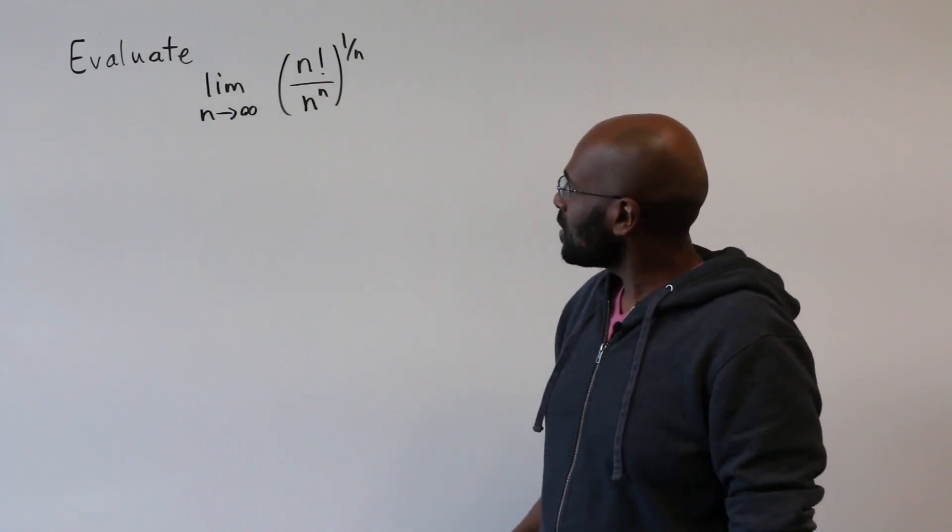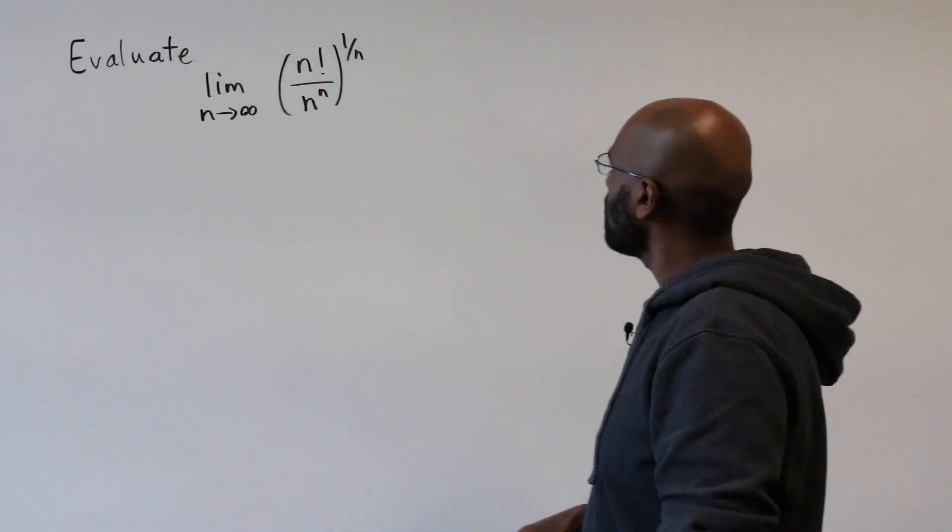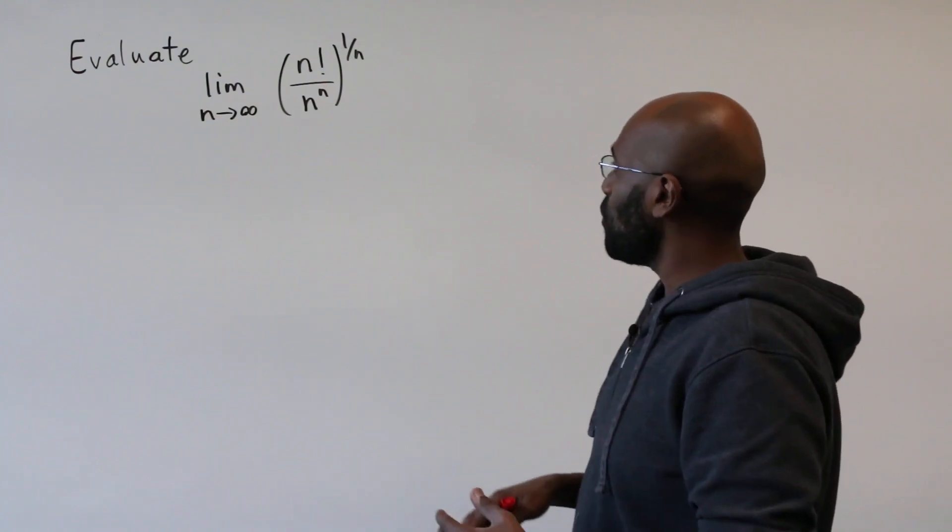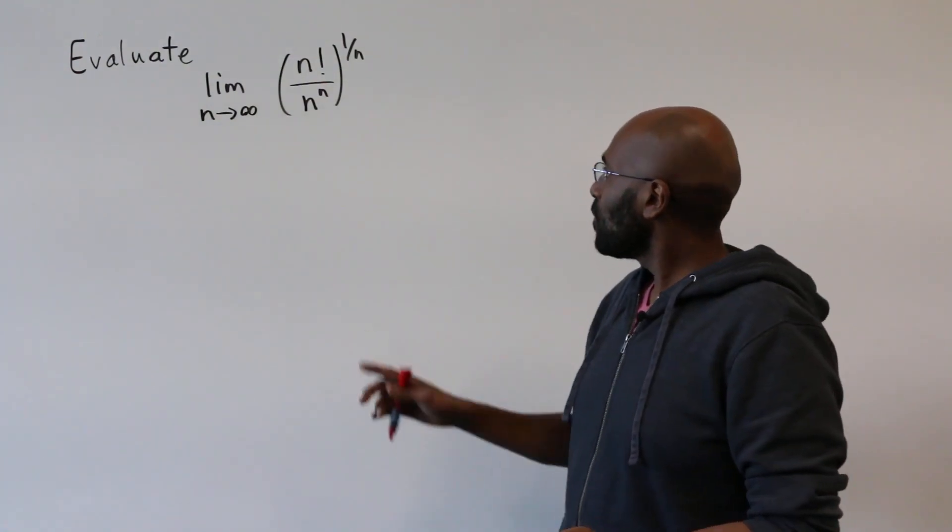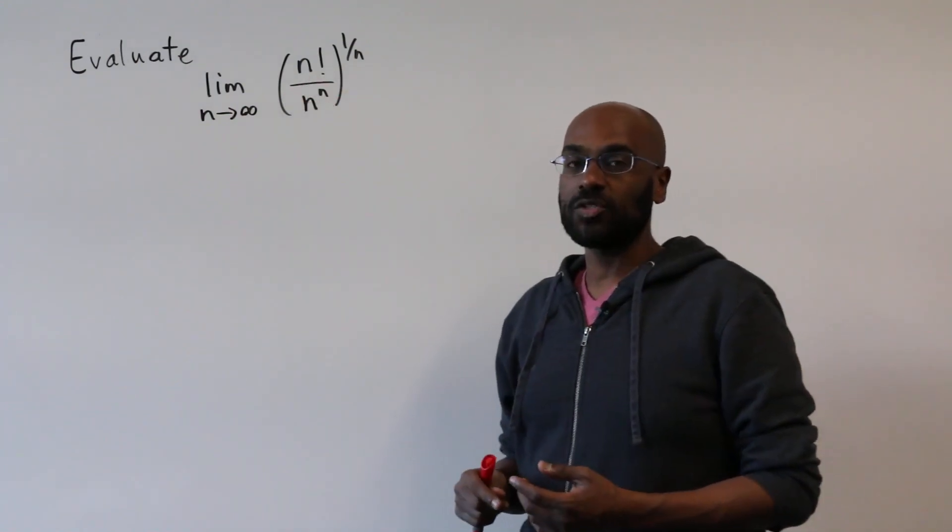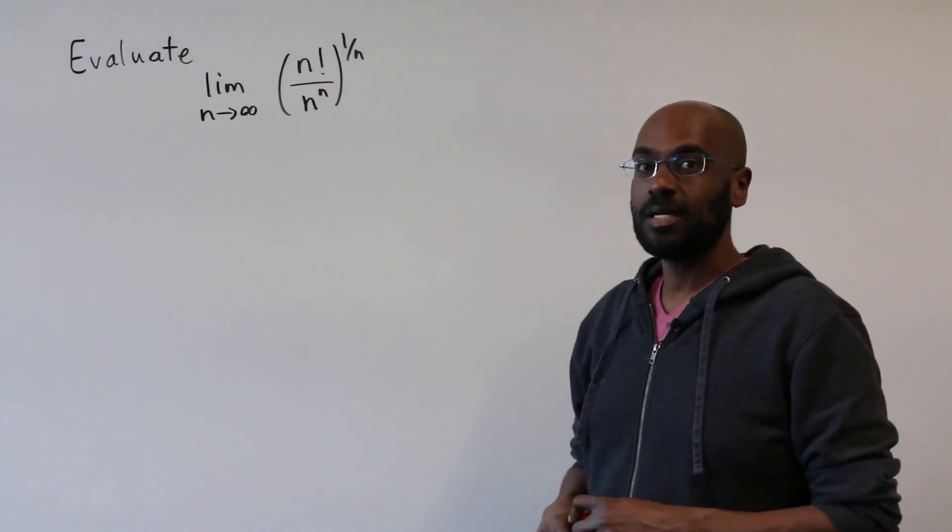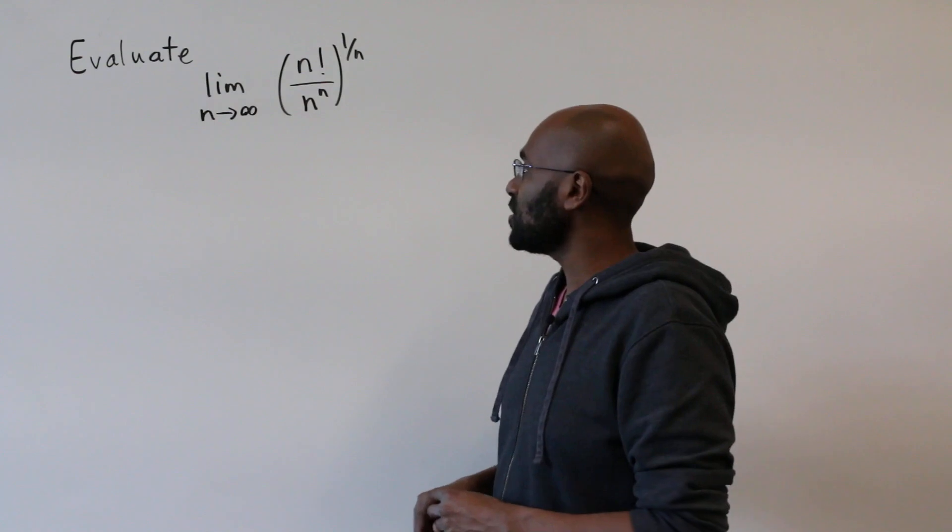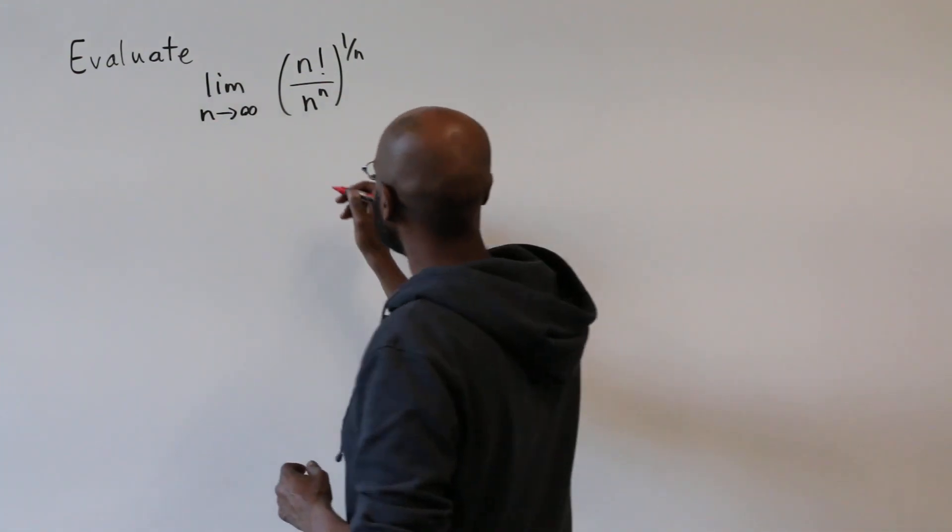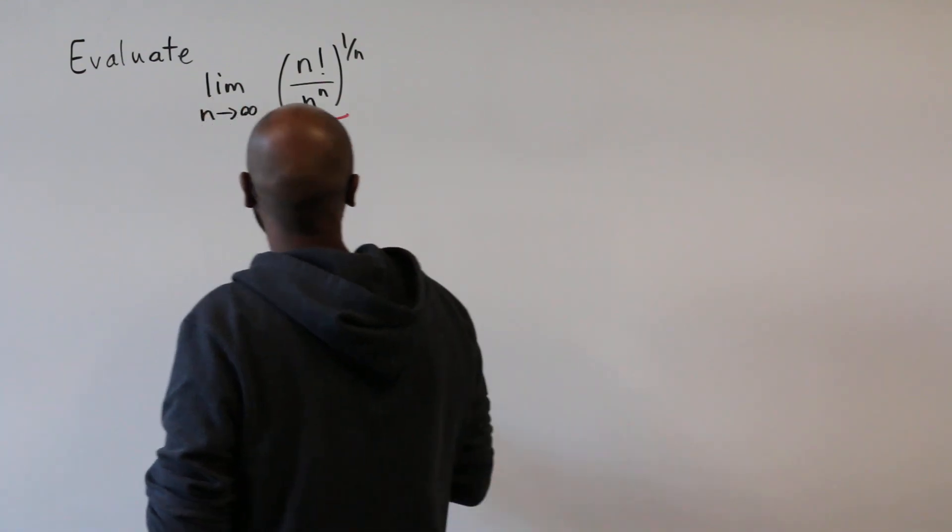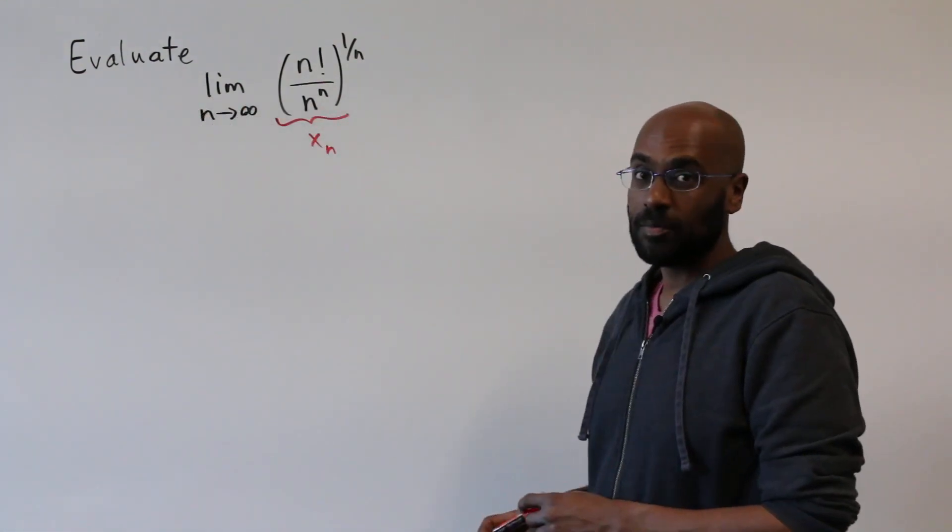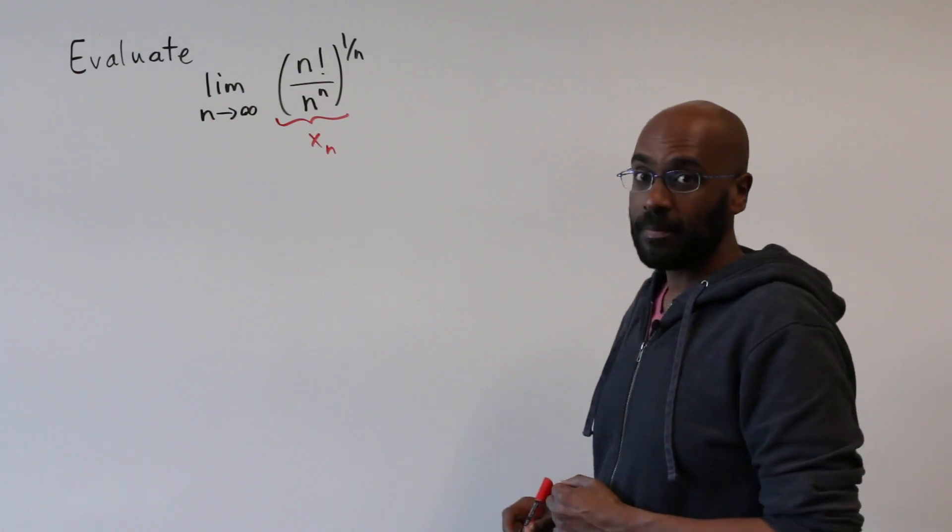Now it's an interesting limit, it's not clear what's going on with it. And if you have some familiarity with something like Stirling's formula, there's a way to approximate n factorial that compares it to n to the n. But we're going to use standard techniques to try to approach this thing. So the first thing I'm going to do is define this to be x sub n and then we're interested in the limit as n approaches infinity of x sub n.